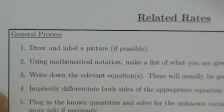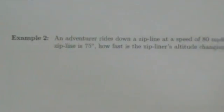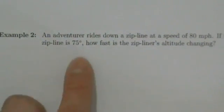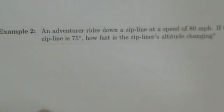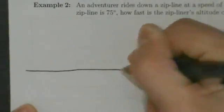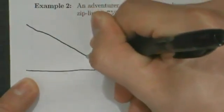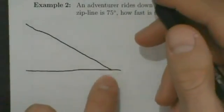We're going to go back to our general process. Step one is draw and label the picture if possible, and it's possible here. We have a guy riding down on a zipline, and the angle of depression of the zipline is 75 degrees. So first, let's draw the ground here — here's the ground, and the zipline is coming down like this. We'll just assume the zipline goes all the way down to the ground.